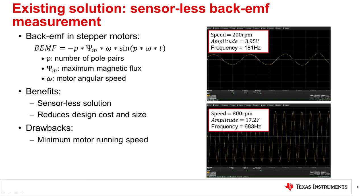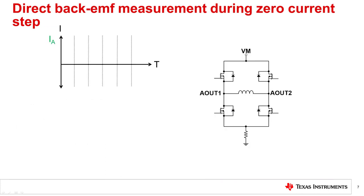Sensorless back EMF stall detection solutions can either be implemented by directly or indirectly measuring the back EMF. TI implements a direct back EMF measuring scheme where the back EMF is measured and sampled during the zero current step to detect a stall condition. The DRV8711 uses this solution for its stall detection algorithm. The following animation will demonstrate how the algorithm functions.